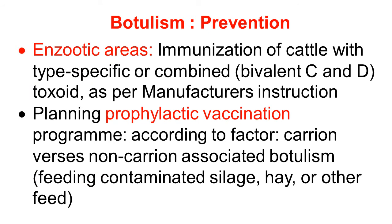Prevention of botulism: in enzootic areas, cattle should be vaccinated or immunized with a type-specific toxoid or combined bivalent toxoid of type C and type D. The dosing schedule should be as per the manufacturer's instructions. A prophylactic vaccination program should be planned according to the risk factor — whether it is carcass-associated botulism or non-carcass-associated botulism.